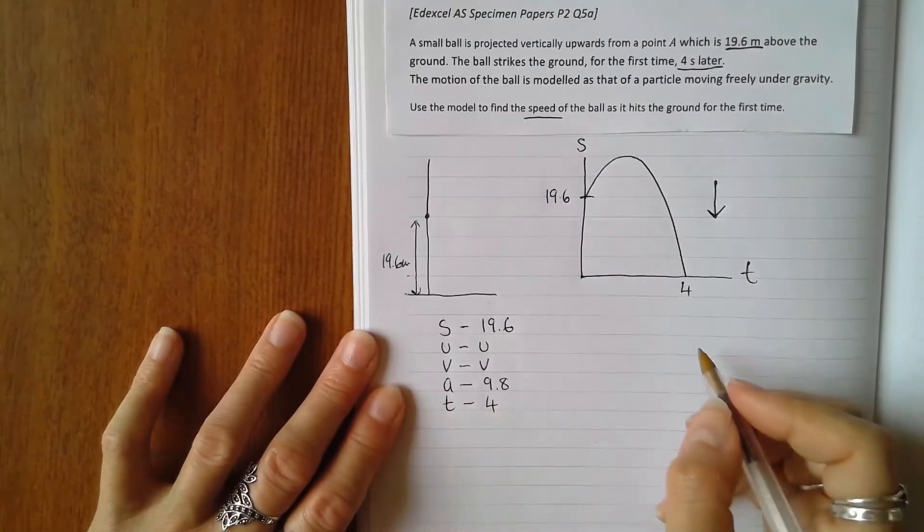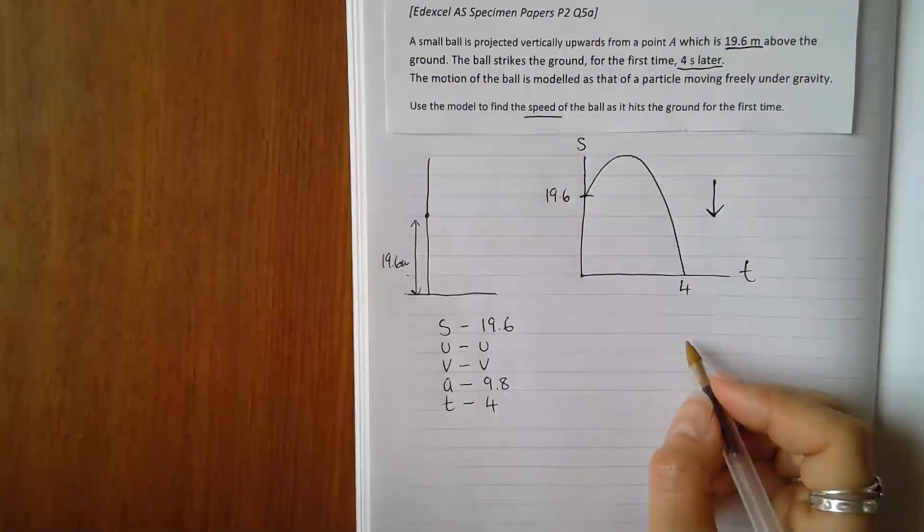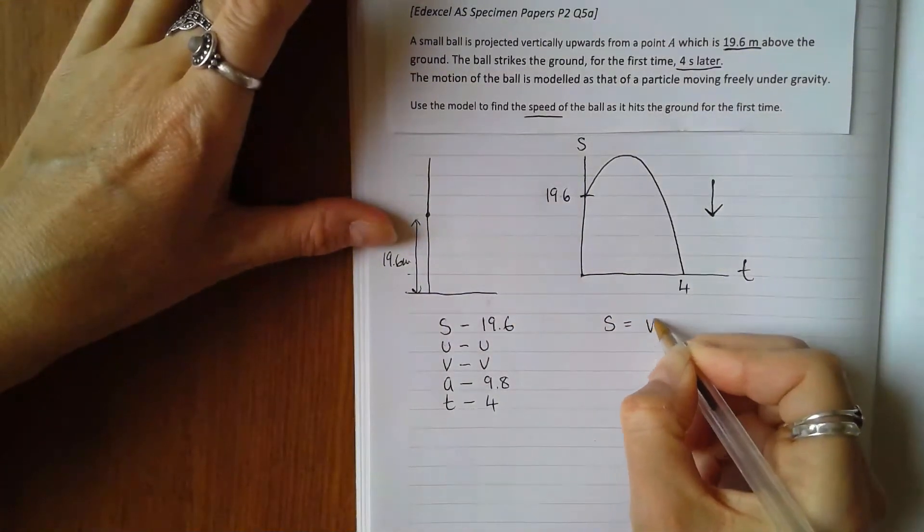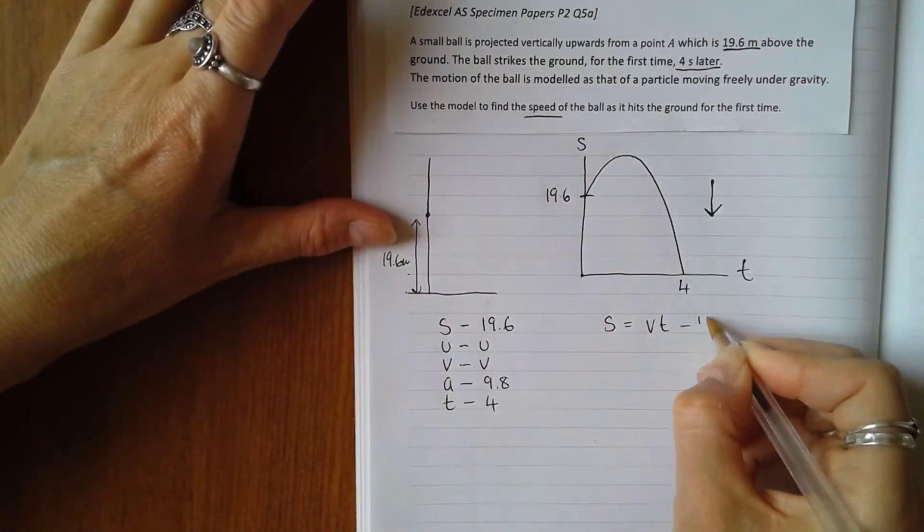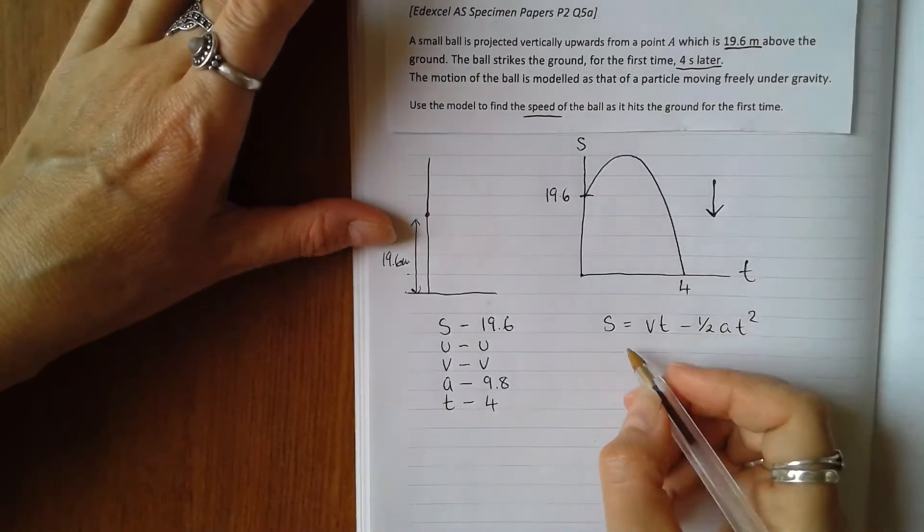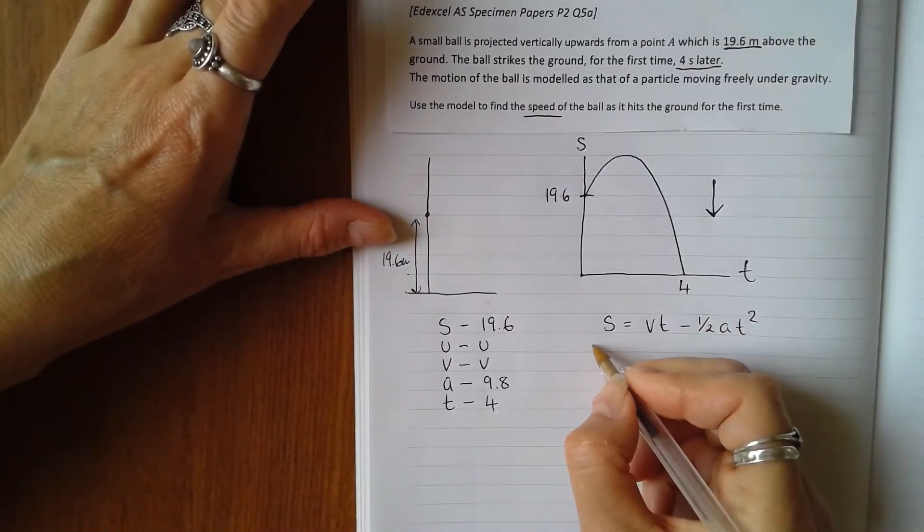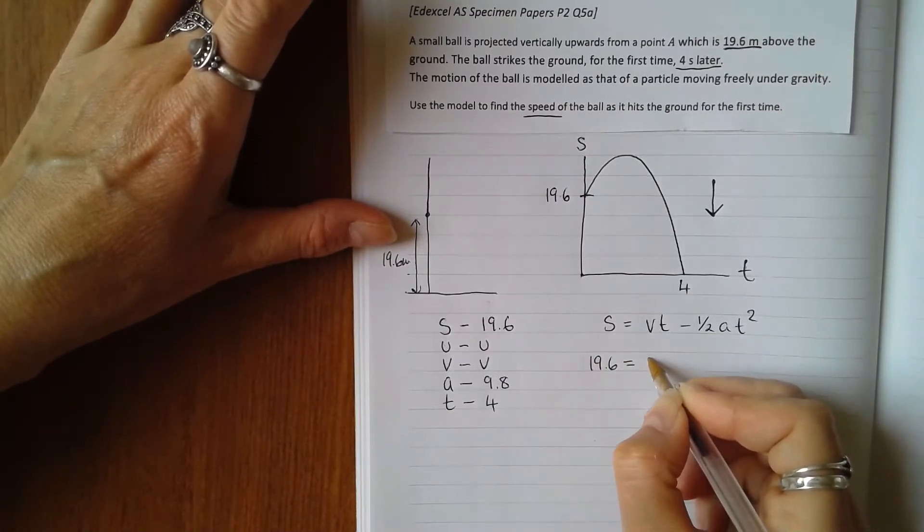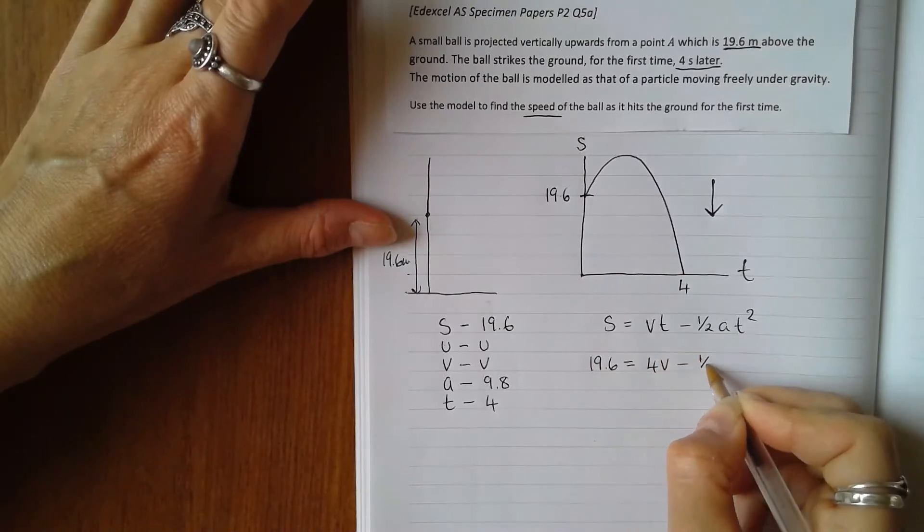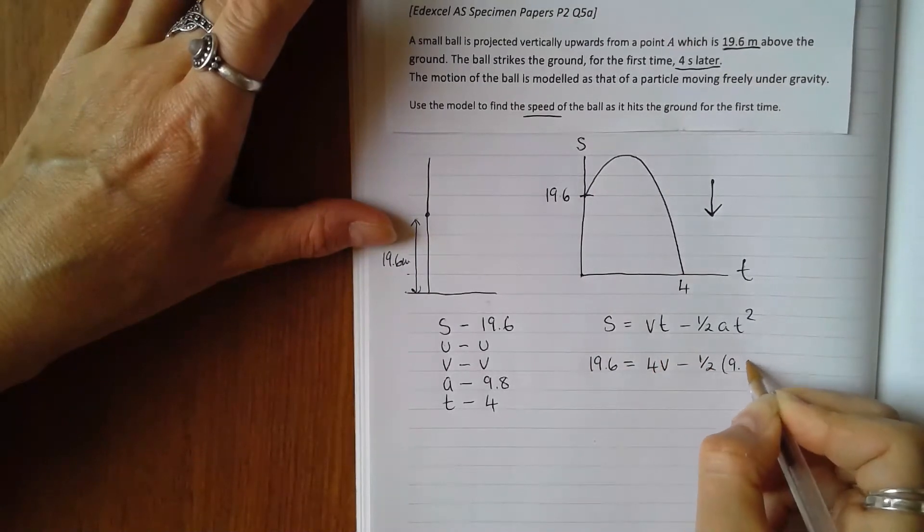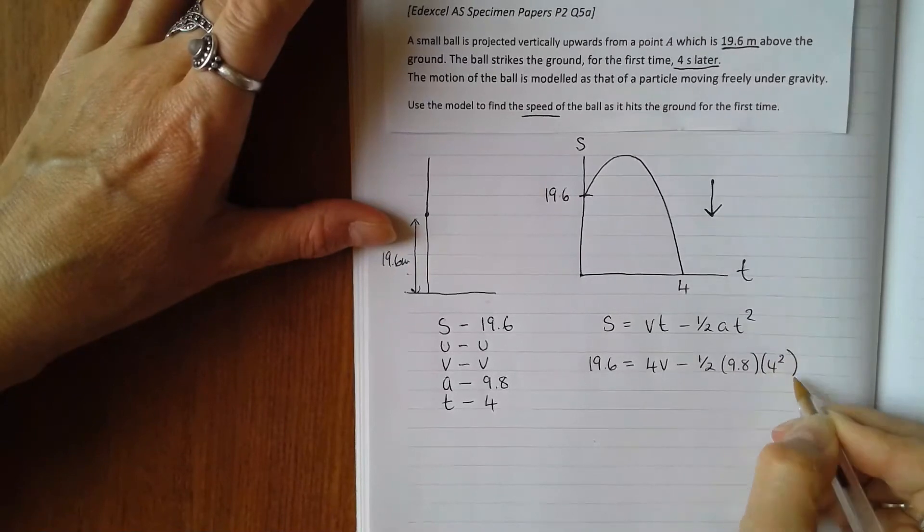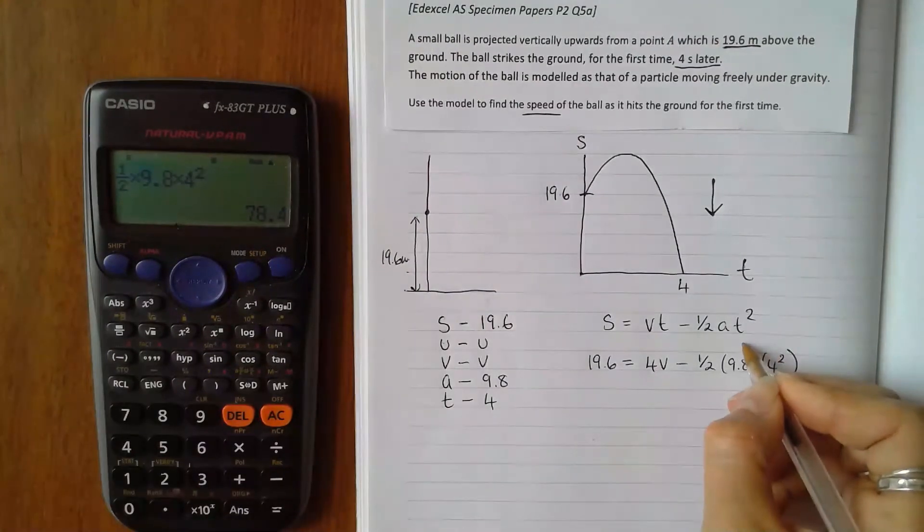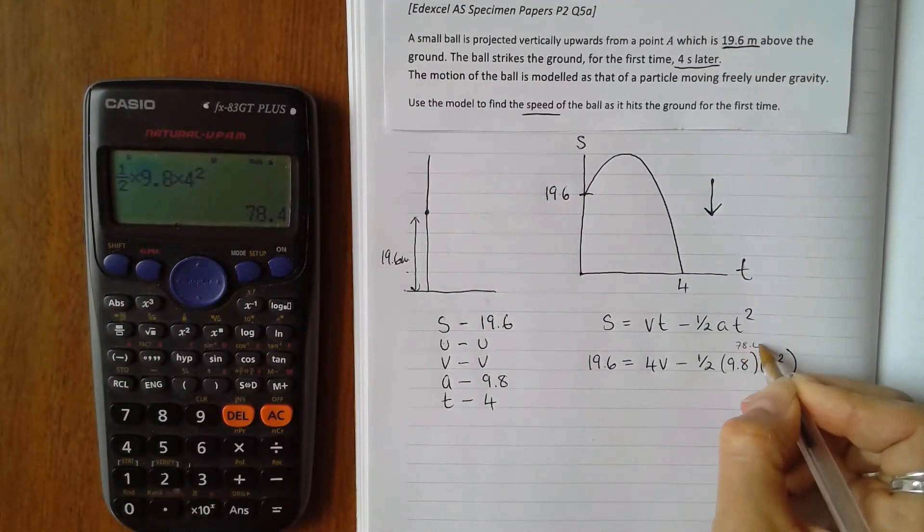Now we just need an equation that links s, v, a, and t, so no u in that one. S equals vt minus half at squared. So just plug in the values: 19.6 equals 4v minus half times 9.8 times 4 squared, and then we calculate that to be 78.4.